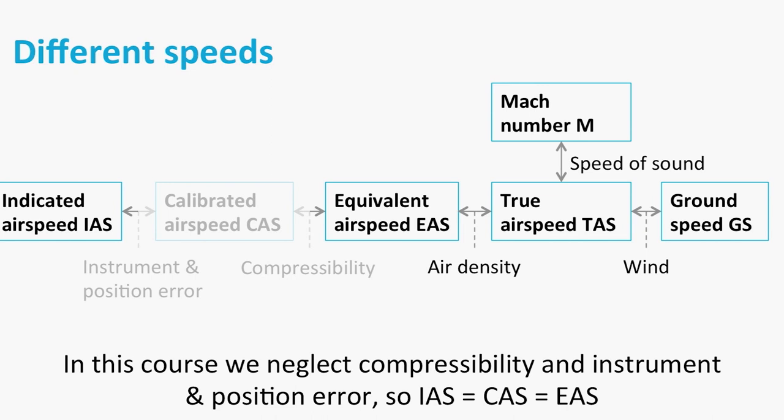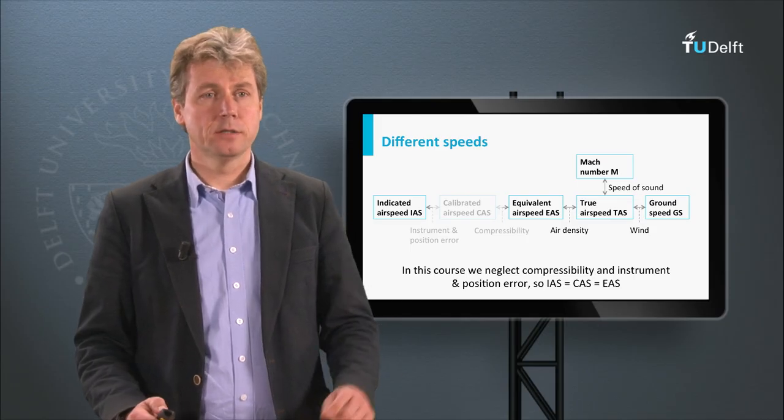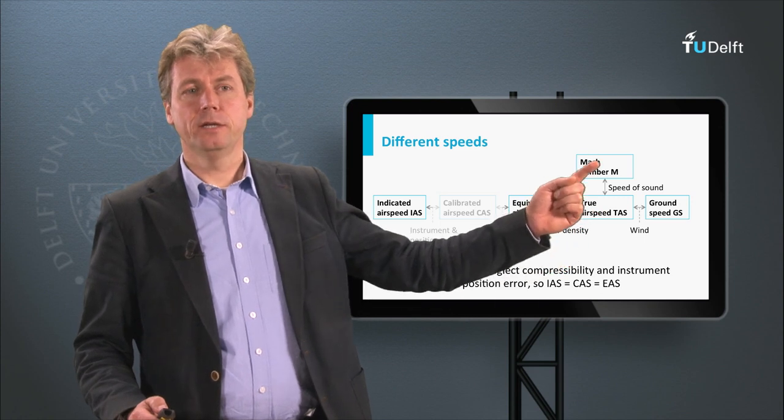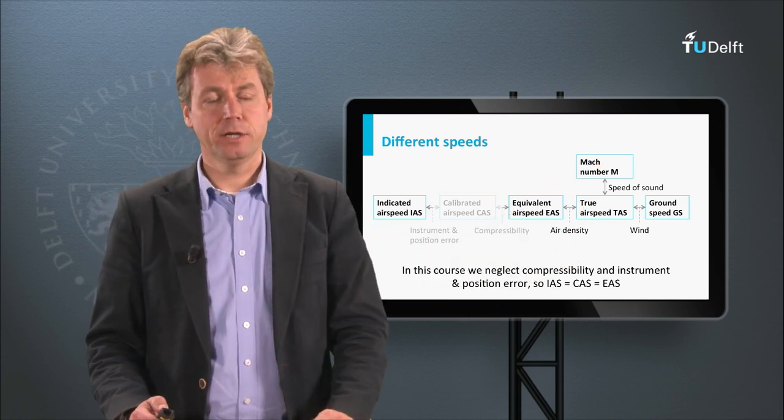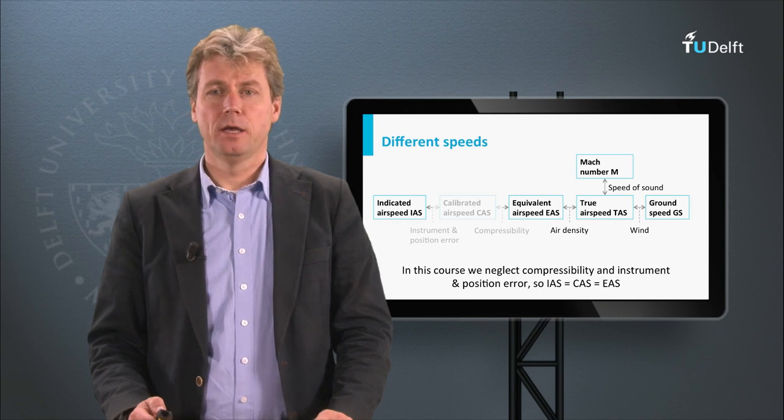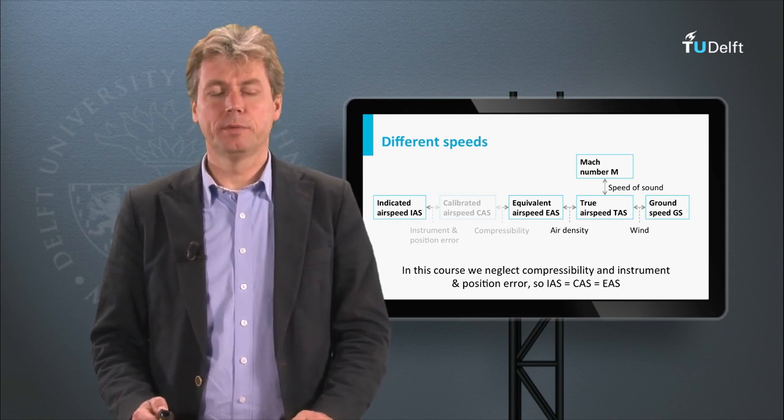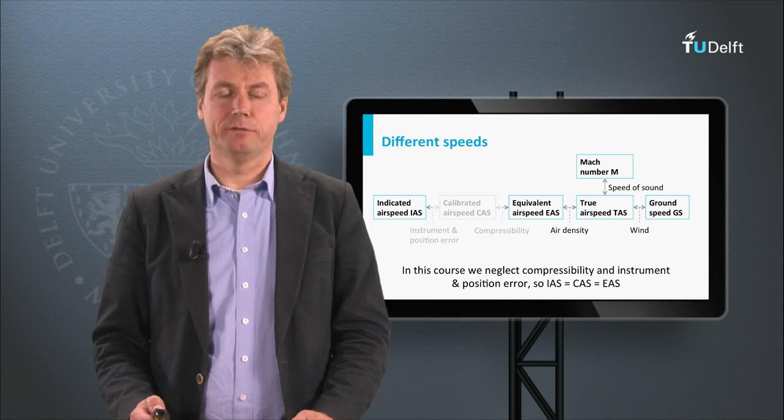To get the Mach number you need the speed of sound, which also depends on altitude by temperature. And this gives you the Mach number, the fraction of the speed of sound which you fly. So this means that the same true air speed will result in a different Mach number for different altitudes. So we need to know the altitude as well. And this is exactly the topic of the next lecture on navigation and instruments.